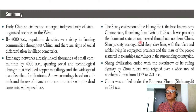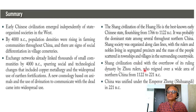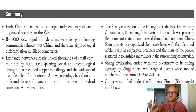The Shang civilization of the Huangho is the best-known early Chinese state, flourishing from 1766 to 1122 BC. It was probably the dominant state among several throughout northern China. Shang society was organized along class lines, with rulers and nobles living in segregated precincts and the mass of the people scattered in townships and villages in the surrounding countryside. Shang civilization ended with the overthrow of its ruling dynasty by Zhou rulers. This surname still exists — Wang, Huang, Ho, Zhu — they are all around still.